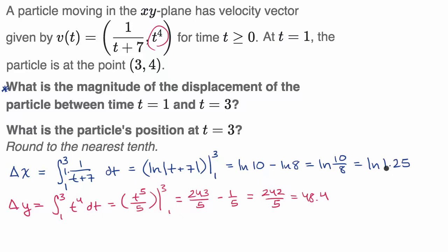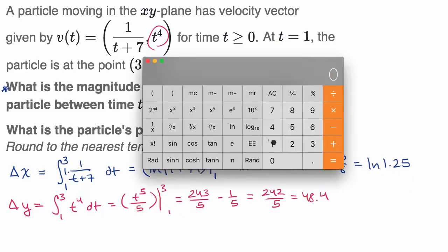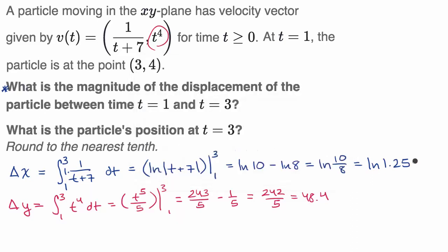Getting the calculator out for the natural log of 1.25 — that's approximately 0.22. So our change in x is approximately 0.22, and our change in y is 48.4.